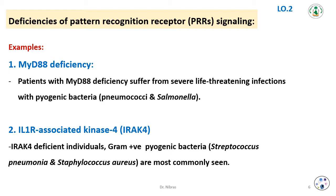The MyD88 adaptor protein is required for signaling through a number of Toll-like receptors. Patients with MyD88 deficiency suffer from severe life-threatening infections with pyogenic bacteria such as pneumococci and Salmonella. Second is interleukin-1 receptor-associated kinase-4, IRAK-4. IRAK-4 is involved in signaling through interleukin-1 and interleukin-18 receptors, as well as through a number of Toll-like receptors.